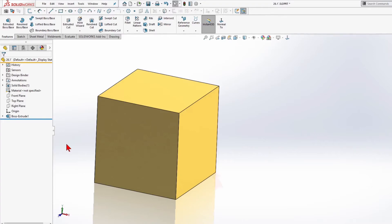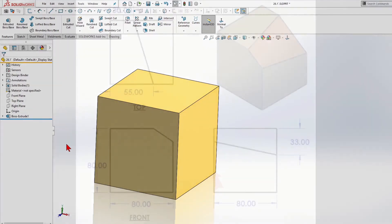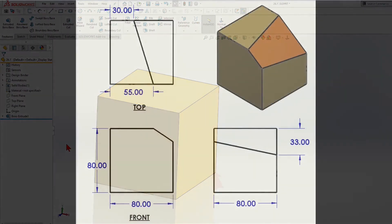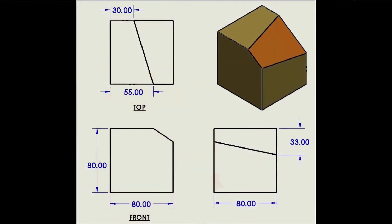According to the definition of the plane, 3 points determine a plane. We should have 3 points not on one line, then only one specific plane can go through those points. I will use these 3 points: Point 1 at 55mm, Point 2 at 30mm, and one more at 33mm.